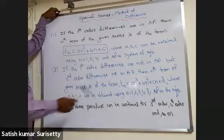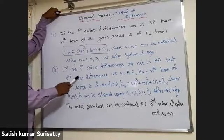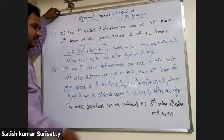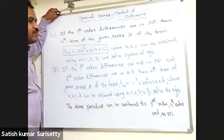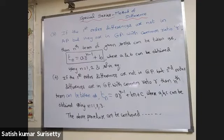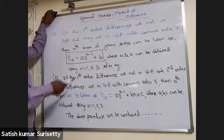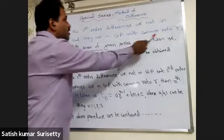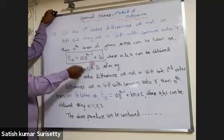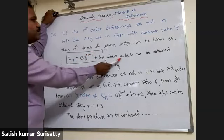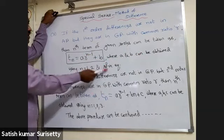This procedure can be continued further. If both first-order and second-order differences are not in AP, we go to third-order differences. If third-order differences are in arithmetic progression, the nth term will be a biquadratic polynomial. If the first-order differences are not in AP but they are in geometric progression with common ratio r, then the nth term of the given series is taken as tn = a·r^(n−1) + b, where a and b are obtained using n = 1 and 2.